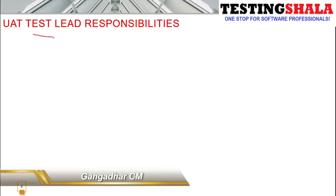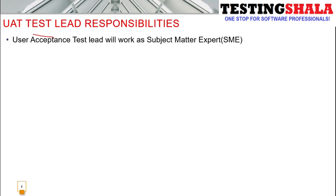The first thing: if you would like to become a user acceptance test lead, you should be a subject matter expert. If you have worked as a subject matter expert, people will appreciate you and respect you because you will have a good amount of knowledge. Every test lead should be a subject matter expert and should be able to perform individual contributor roles as well, which gives you a higher weightage compared to a test lead who doesn't know the subject or doesn't do hands-on work.